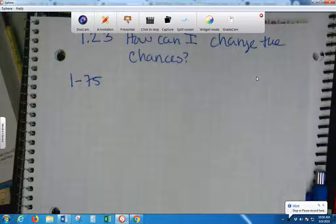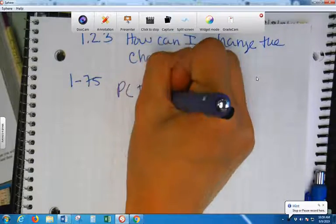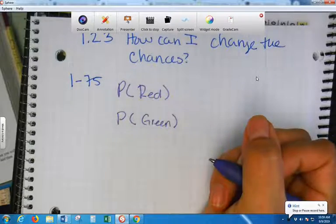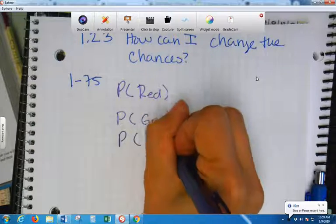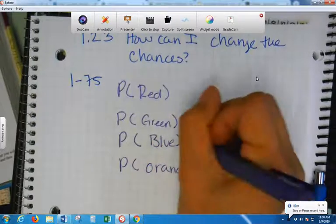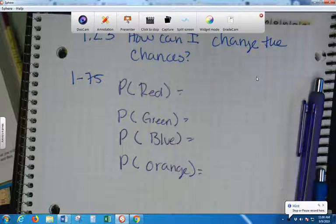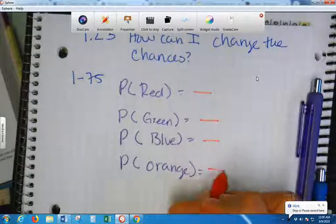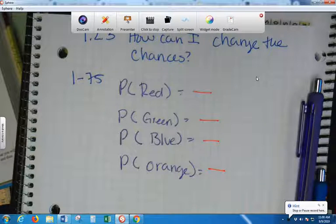So, I'm going to ask you to determine the probability of red, the probability of green, the probability of blue, and the probability of orange because that's what it says. Now, how do I write probability? What's the first step in writing probability? What does it look like? A fraction. So, I'm going to set up fractions for these problems.